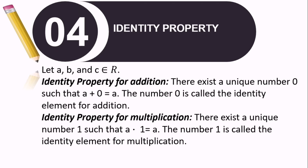Next, for number 4 is identity property. For identity property for addition, there exists a unique number 0 such that A plus 0 is equal to A. The number 0 is called the identity element for addition — whatever you add to 0, the answer is still that number. Next is identity property for multiplication: there exists a unique number 1 such that A times 1 is equal to A. The number 1 is called the identity element for multiplication — whatever you multiply by 1, the answer is still that number.